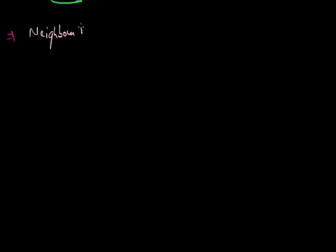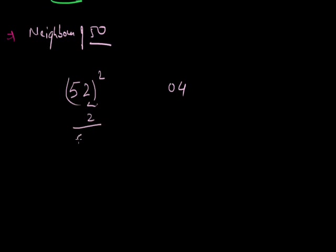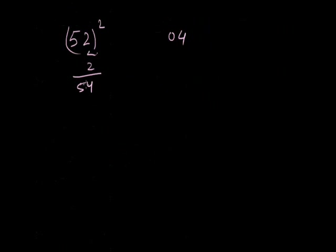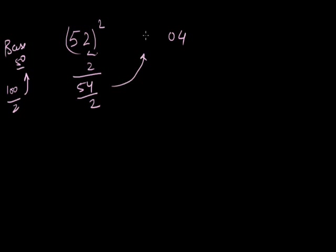What about numbers around 50? Take 52 squared. The process is the same: 2 squared is 04. Then 52 plus 2 gives 54. But since the base was 100 and now the base is 50, which is 100 divided by 2, we divide 54 by 2 to get 27. So 52 squared is 2704.